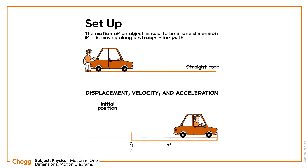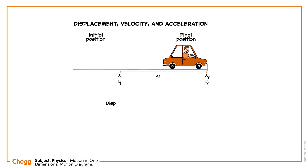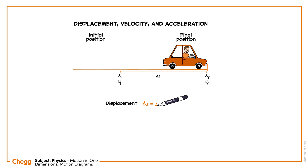the car covered some distance and ended up at its final position xf, with a final velocity vf. The displacement delta x of the car is simply the difference between the final and the initial positions of the car. That is, delta x equals xf minus xi.